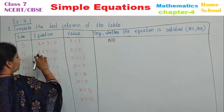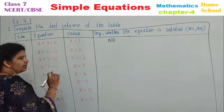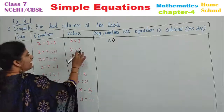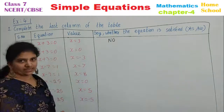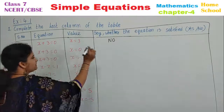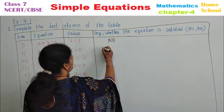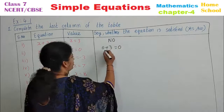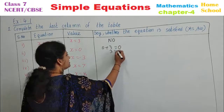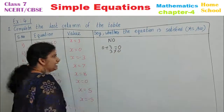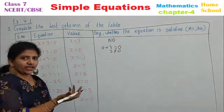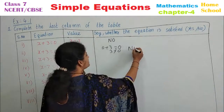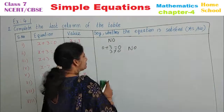The second one: same equation x plus 3 equals 0, putting x equal to 0. Substitute: 0 plus 3 equals 3, and 3 is not equal to 0. So write no — it is not satisfied.